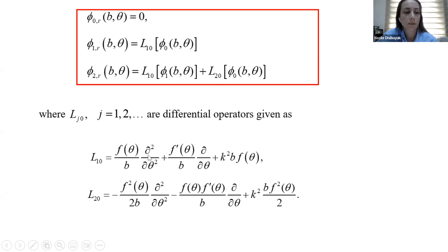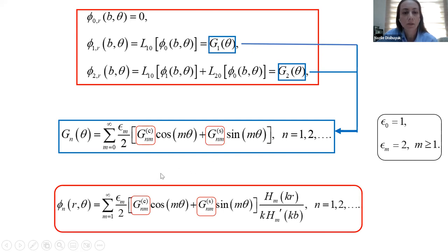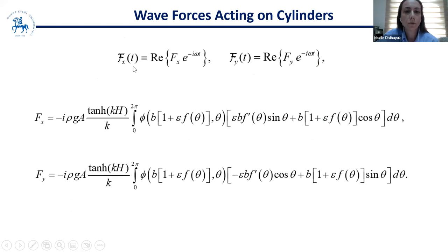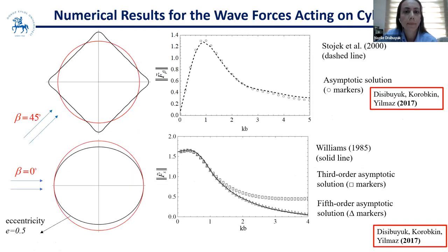For higher-order boundary conditions, the right-hand side is given by Fourier series — because there are multiplications and summations of Fourier series. For example, phi-zero is given as a Fourier series; after multiplication, the shape function is also a Fourier series, and multiplication of these series gives a Fourier series again. By equating the left- and right-hand side Fourier series, we can determine the higher-order velocity potentials using the Fourier coefficients. For the wave forces, expanding by Taylor expansion at r equal to b, only the constant term of the Fourier series contributes.